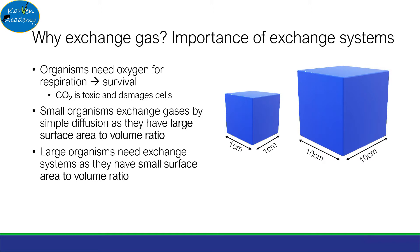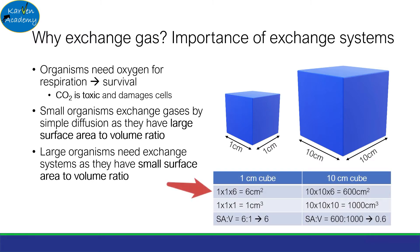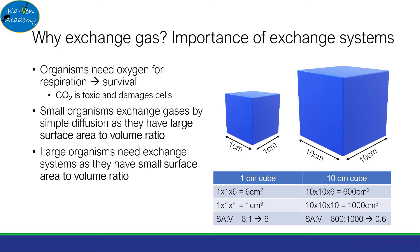But what is surface area to volume ratio? Let's look at an example. Take the small blue cube and the large blue cube, measuring 1cm and 10cm in length respectively. The surface area of the 1cm cube is 1×1×6, as cubes have 6 faces, giving a value of 6cm². The 10cm cube has a surface area of 10×10×6, giving 600cm². The volume of the 1cm cube is 1cm³, while for the 10cm cube it is 1000cm³. Therefore, the ratio of surface area to volume is 6:1 and 600:1000 for the 1cm and 10cm cubes respectively. This means the surface area is 6 times greater than the volume for the 1cm cube, while it's only 60% in the 10cm cube.